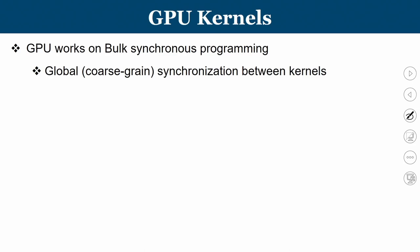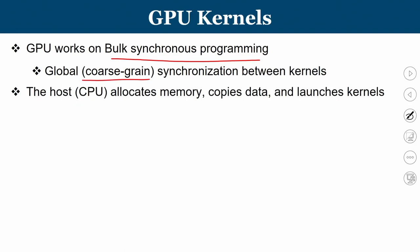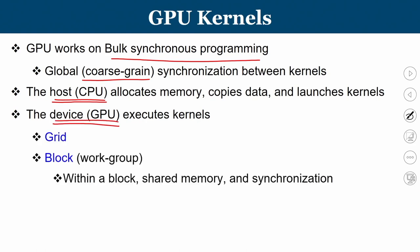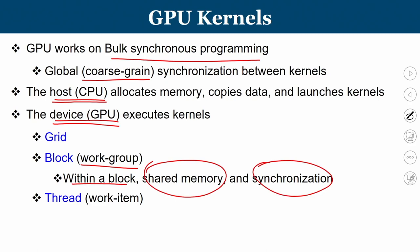Inside the GPU kernel, the GPU works on a bulk synchronous programming model using global synchronization between kernels in a coarse-grained approach. The host CPU allocates memory, copies data, and launches the kernel. 'Host' means CPU and 'device' means GPU in this context. The device GPU executes these kernels. The broader organization of a GPU consists of grids; grids are composed of multiple blocks (also called work groups), blocks have shared memory and synchronization support, and blocks consist of multiple threads — the basic work item.